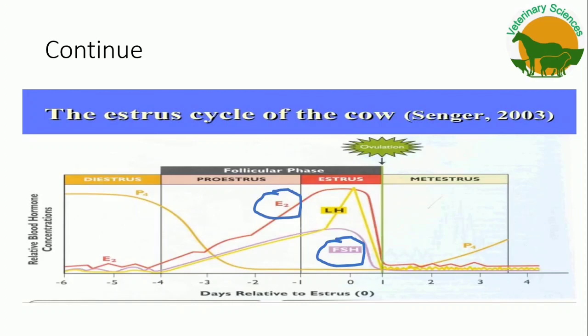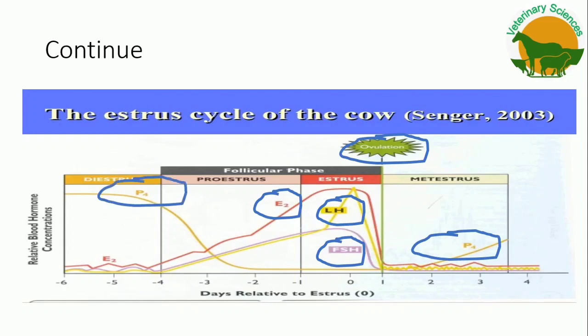After estradiol attains its peak, the luteinizing hormone (LH) surge occurs and ovulation follows. Now the stage of metestrus starts. Progesterone begins to be secreted from the corpus hemorrhagicum. After five to six days, the corpus luteum matures and diestrus starts, in which P4 is released at its peak until PGF2 alpha comes from the endometrium to regress the corpus luteum and start a new cycle.